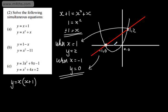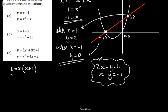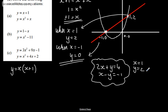If we go back to the previous video, we had 2x plus y equals 4 and x minus y equals negative 1 — two linear equations. The solutions were x equals 1 and y equals 2. If I wanted to draw these graphically, making y the subject on the first gives y equals negative 2x plus 4, and making y the subject on the second gives y equals x plus 1.